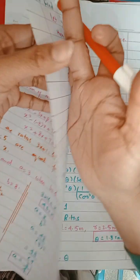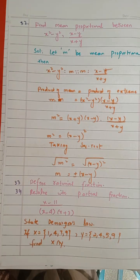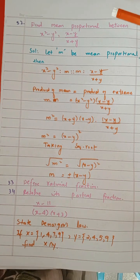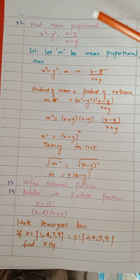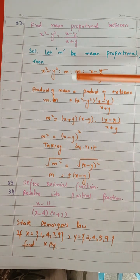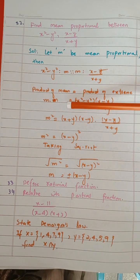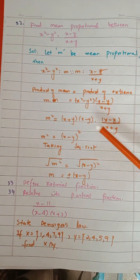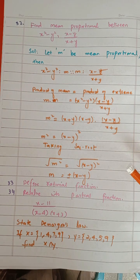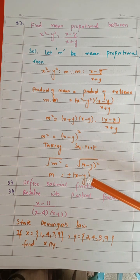Next, we have to find the mean proportion. The mean proportion means we introduce a number in the center which does not already exist. Let M be the mean proportion. The rule is that the product of means is equal to the product of extremes. We multiply M with M to get M squared. Apply this formula — it will cancel from x plus 1 to x plus 1. Taking square root on both sides, plus minus x minus y will come as the value.